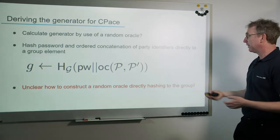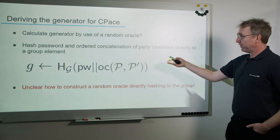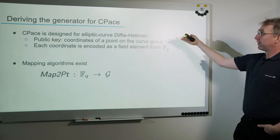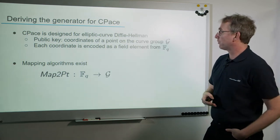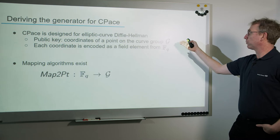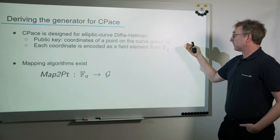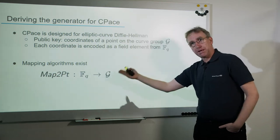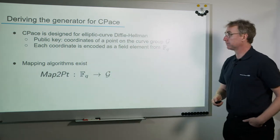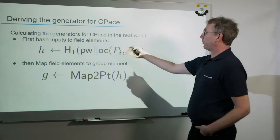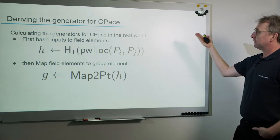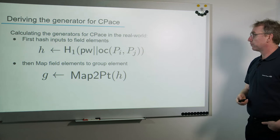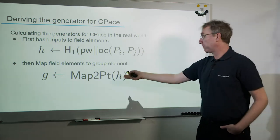What we use in real-world designs: CPACE is meant to be used on elliptic curve groups, where the public key consists of coordinates of a point on the curve group, each encoded as a field element. There exist mapping algorithms which take a field element and output a group element. To calculate the generator, we first hash the inputs — the party identifiers concatenated with the password — to obtain a field element, then map the field element to a group element using the mapping primitive.